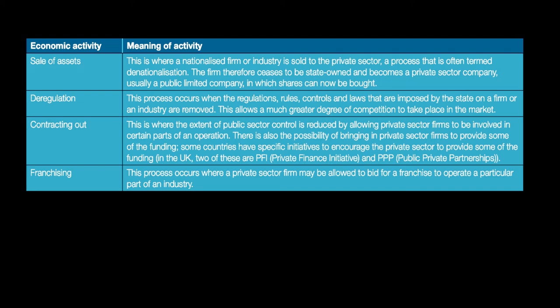The third kind of privatization practice is contracting out. Under such an arrangement, the public sector issues a contract to a private firm for the supply of some goods and services. One advantage is that private sector firms can also provide some of the funding — in some countries, we have things like private sector initiatives and public-private partnerships (PPP), which allow the private sector to provide funds to these initiatives. Another form is franchising, where the private sector bids for a franchise to operate a particular part of the industry. For example, if an airline is a public sector organization, the food served can be franchised to a private sector firm.